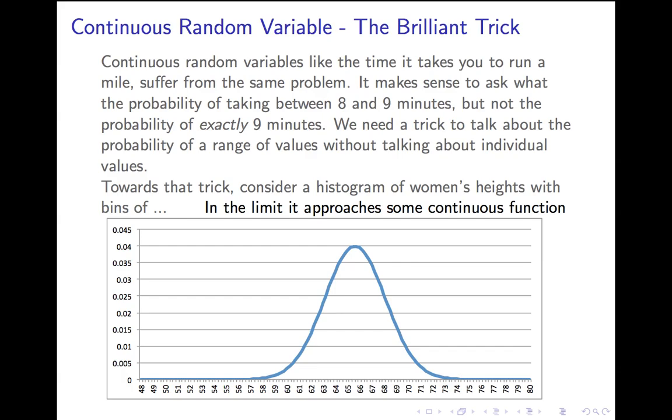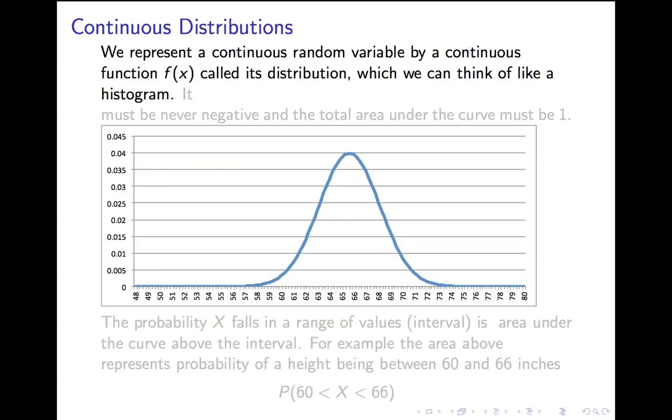So we want to think about the underlying continuous function as being the limit of this histogram getting finer and finer, and is really representing the continuous random variable. So we're going to represent continuous random variables by continuous functions, f of x, right? That's the graph of a continuous function.